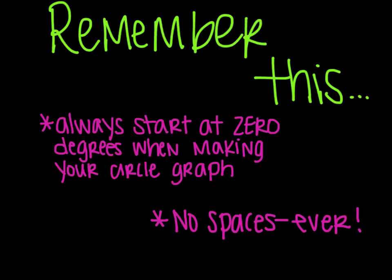Remember this, when you start to graph them, which we haven't showed you on the video. We'll do that in class. Always start at 0 degrees when you're making your circle graph. And then count from there. And then there are never, ever, ever any spaces involved ever. If there are spaces, that means you did it wrong.